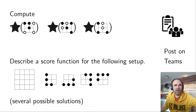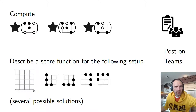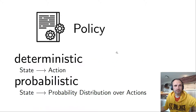The next assignment: compute the value or score for three boards according to the score function I just gave you. Then generalize this principle of the score function to a 5x5 board for the given winning shapes. Think about how you may want to implement or define it for that case — there could be multiple valid solutions. Post your answer on Teams so I can see it; we skip this assignment in the video but you can do it at home.